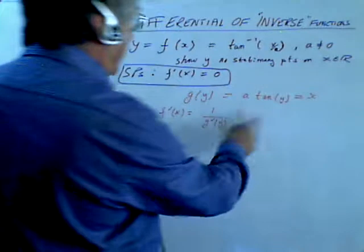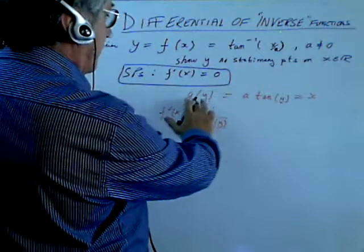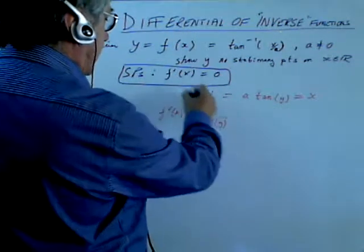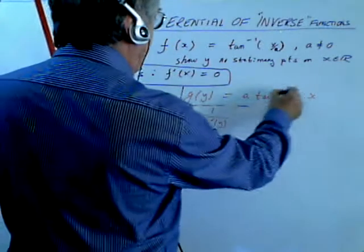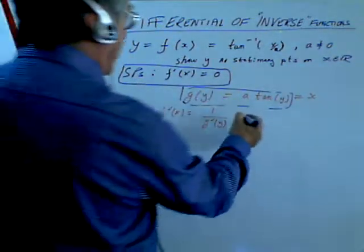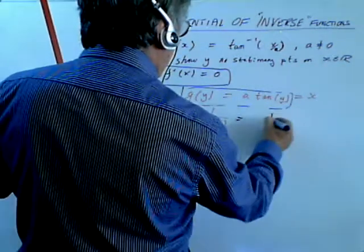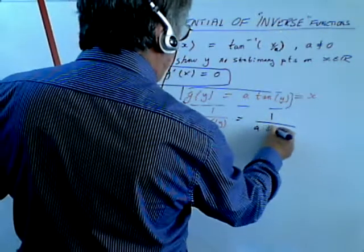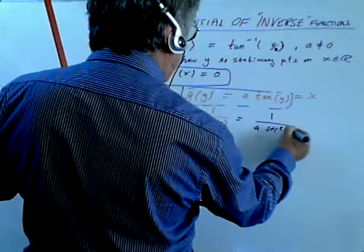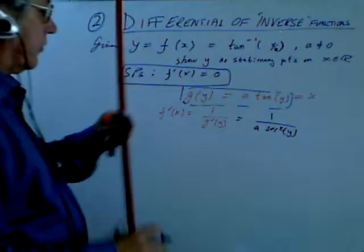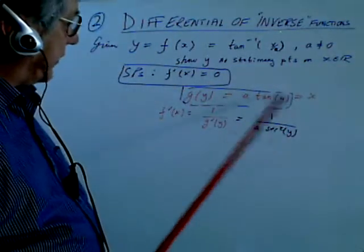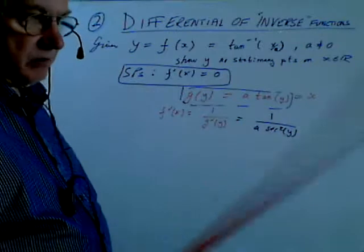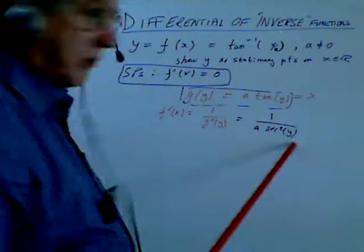Now, what is G'(y)? Well, we'll just simply look at this part and differentiate it with respect to y. So it's just 1 over, because it's 1 over, it's a reciprocal, a sec²(y). Okay? Because when we differentiate tangent, we get sec squared. Look that up on the table, so you just need to know that little fact.